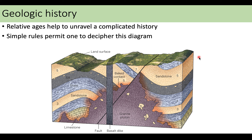Using all of those principles, we can put together the story of a location in terms of relative age. Remember, none of those principles tell us anything about actual age in years — but they help us put things in order and understand what happened at that location: have there been faults, have there been intrusions? Using those rules, we can take a diagram and figure out exactly what happened.